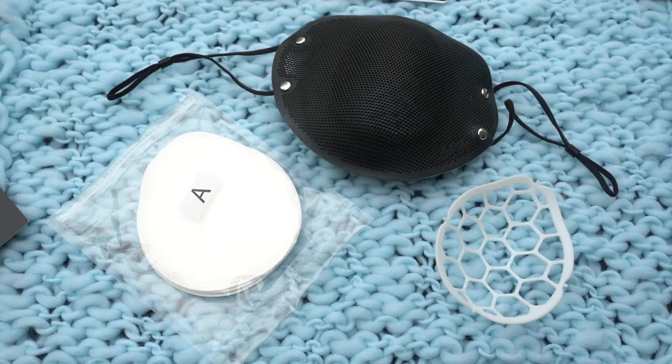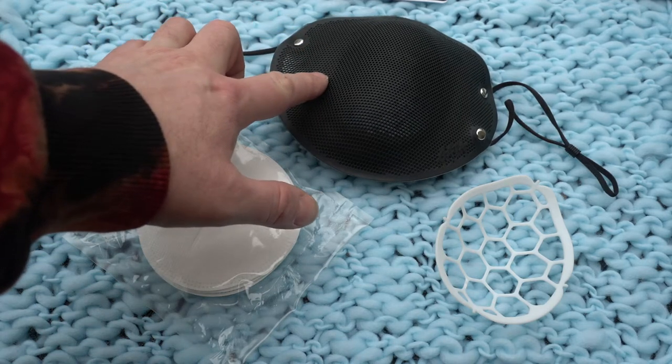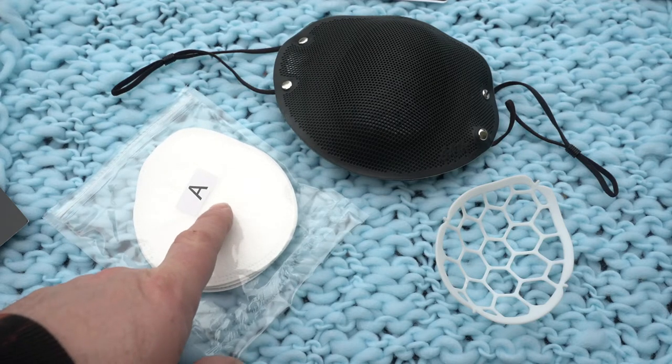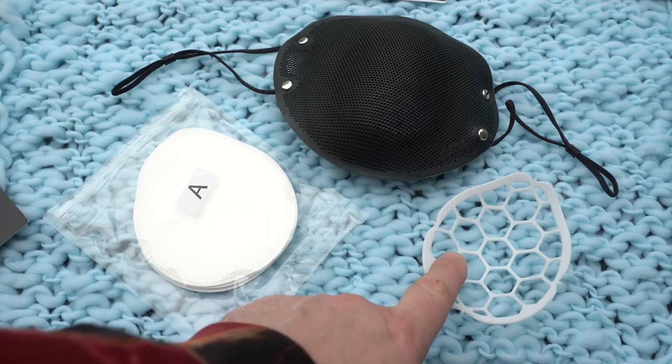This video describes how to put a filter into a GataMask. The GataMask comes with three parts: the silicon face seal portion, the disposable filter, and the filter frame.